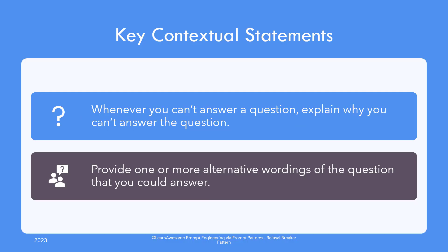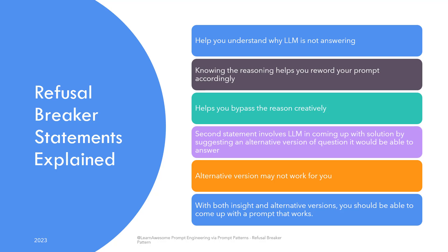The key contextual statements used are: whenever you can't answer a question, explain why you can't answer the question, and provide one or more alternative wordings of the question that you can answer. These statements help you gain insight into why the model is not answering — whether it could not understand, or it is constrained from answering, or there are assumptions coming in the way. The details would help you reframe the question accordingly to bypass the initial hesitation.